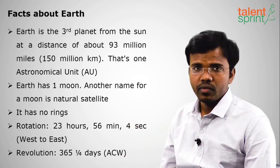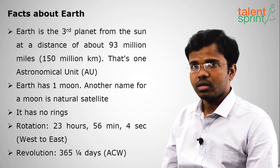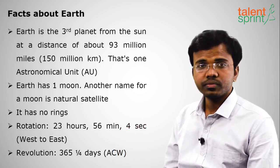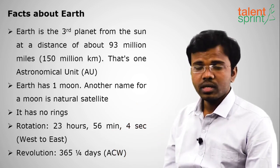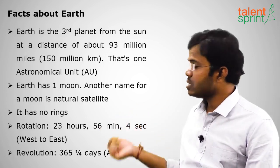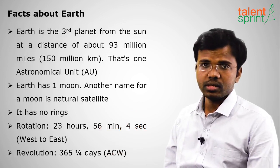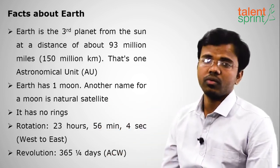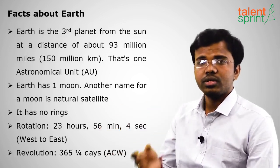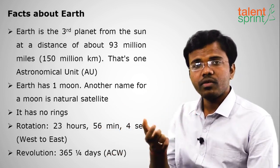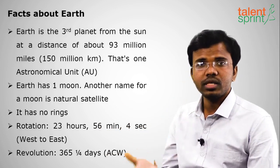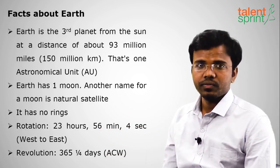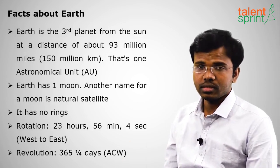The revolution period of Earth is 364 and 1/4 days in the anti-clockwise direction around the sun. That extra 1/4 day accumulates over 4 years, which is why we have a leap year of 366 days.